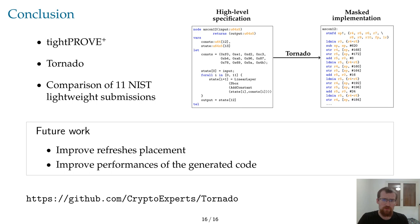One of the areas of improvement of this work concerns the placement of the refreshes inserted by TightProof+. Ideally, we would like to be able to show that the number of refreshes inserted by Tornado is minimal. Another area of improvement is the performance. We would like to improve the performance of the code generated in order to be as efficient as hand-tuned implementations. Thank you for your attention.